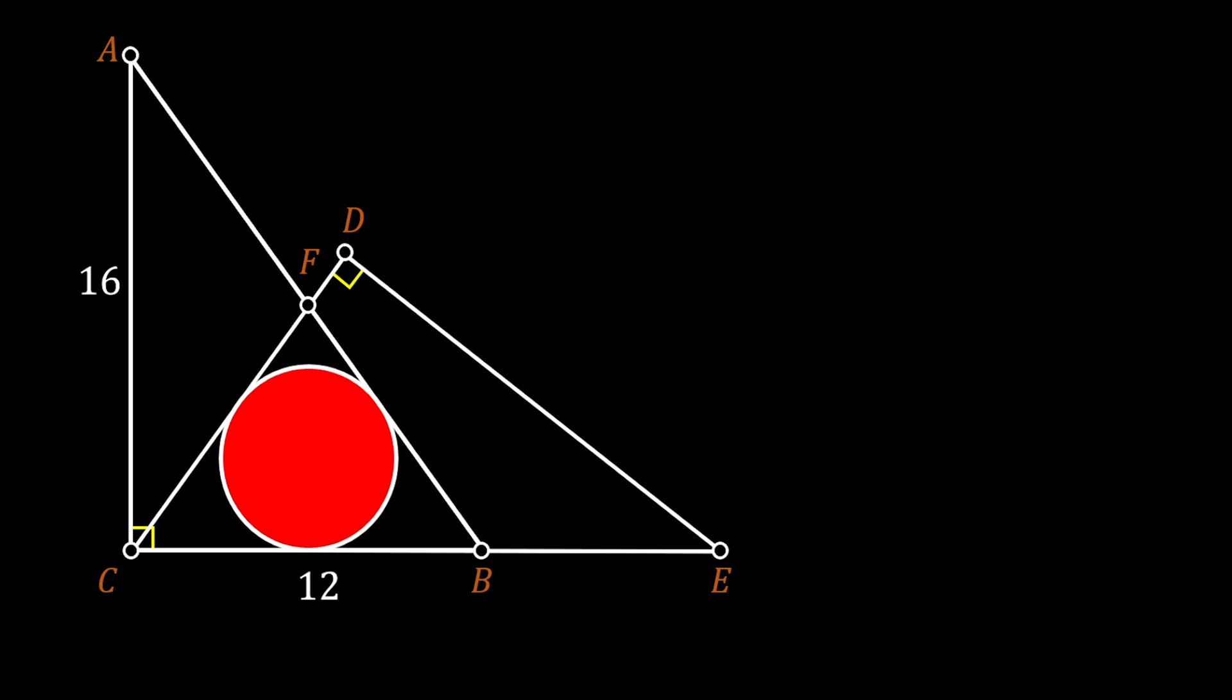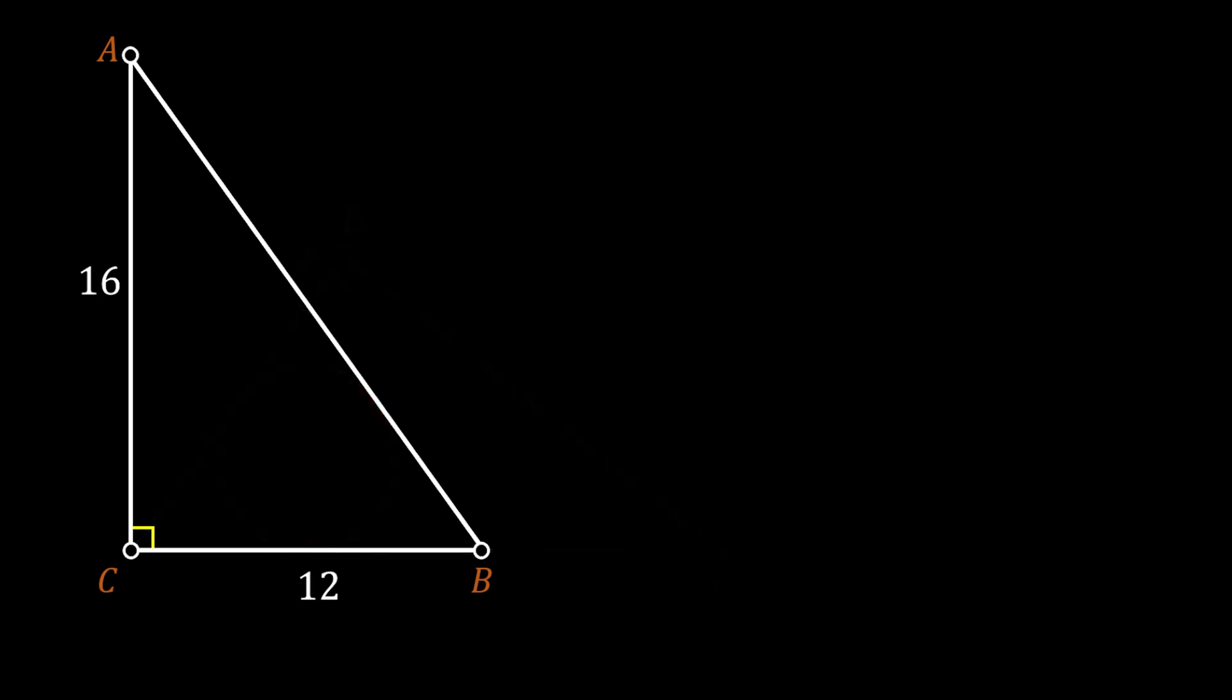Now let's focus on the triangle ABC. We will label its acute angle at the point A as alpha and the acute angle at the point B as beta.